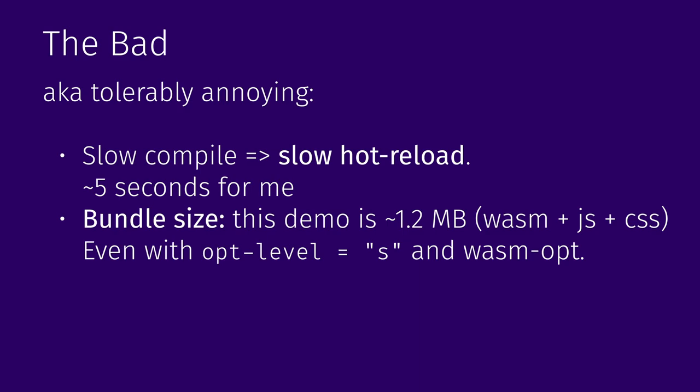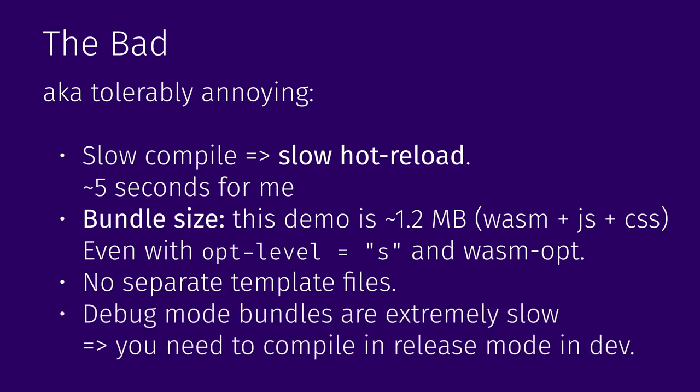Something specific to Yew is that there is no support for separate template files. If you write a larger component it can be quite painful because you have this huge HTML scene inside your Rust code with a bunch of Rust embedded in it, and sometimes you just want to extract layout-heavy sections into a separate HTML file — but sadly this is not possible. It's a small inconvenience. Finally, debug mode Rust is extremely, painfully slow. When I first tried the demo in debug mode it was essentially unworkable — you'd press a button and then wait. The moment I switched to release mode it was fine, but it can affect compile times.